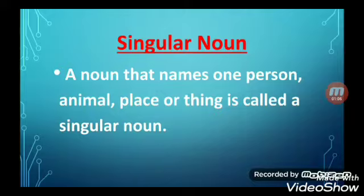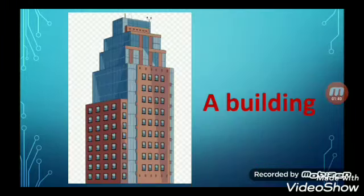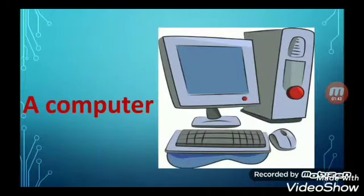A noun that names one person, animal, place or thing is called a singular noun. Here are some examples to understand it. These examples all refer to one noun, so they are all singular nouns.